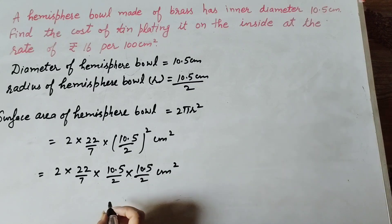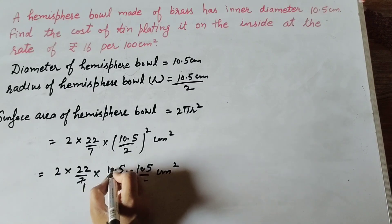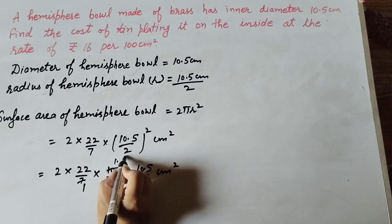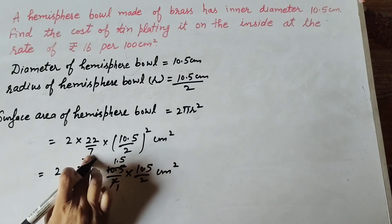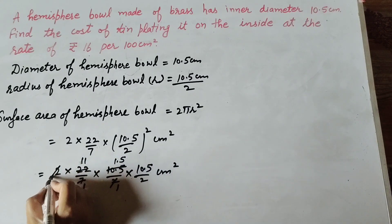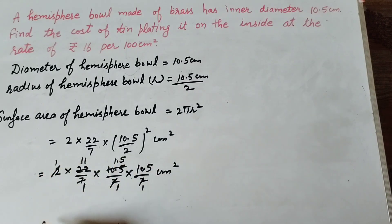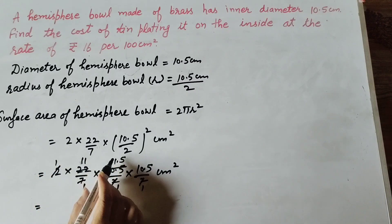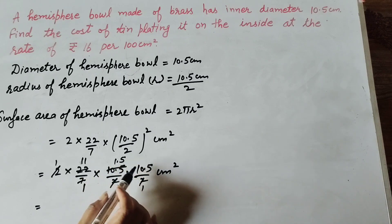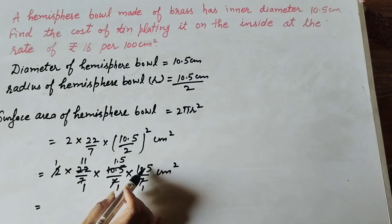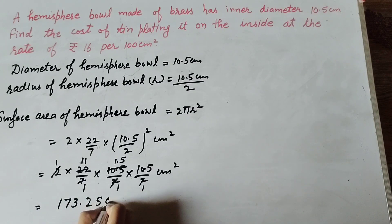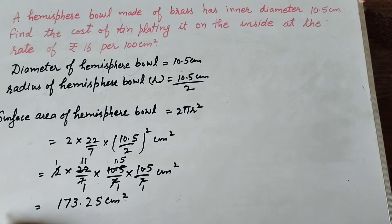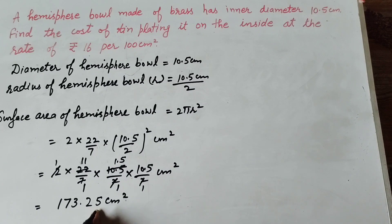Here, 7 and 10.5 are both divisible by 7 so we cancel them. Then 2 and 22 are both divisible by 2 so we cancel them. And 2 and 2 again are divisible by 2 so we cancel them. Now 11 multiplied by 1.5 multiplied by 10.5 gives us the answer: one hundred seventy-three point two five centimeter square. This is the inner surface area of the hemisphere bowl.